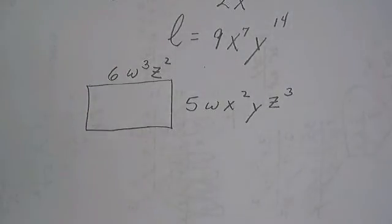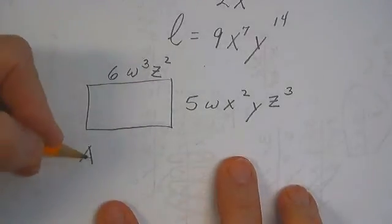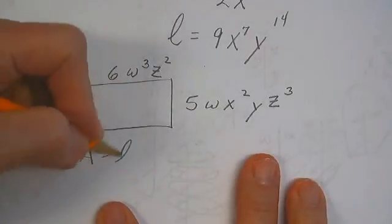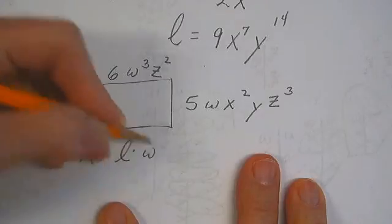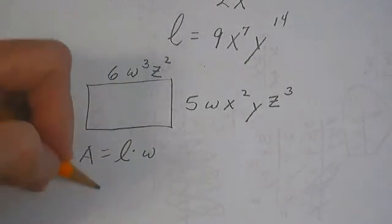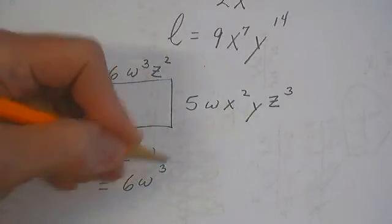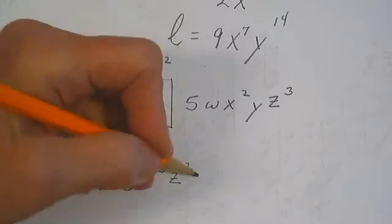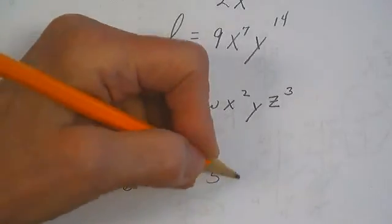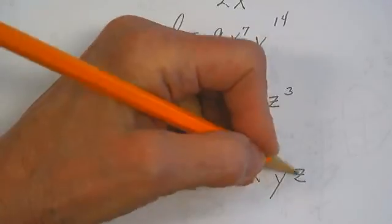Guys, no biggie. We can do this. Area equals length times width. The length is 6w cubed z squared times 5w x squared y z cubed.